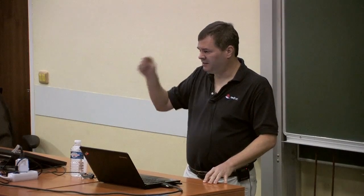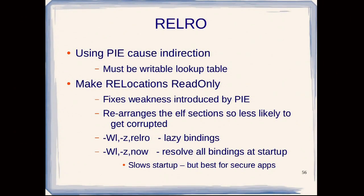Fortify Source needs to be used any time you use PIE, because PIE requires some writable addresses so the runtime linker can update mappings as things move around in memory, doing indirect calls. RELRO also rearranges ELF sections so they're less likely to get corrupted. There are two ways to use RELRO: plain RELRO, which is considered partial, enabled by default since Fedora 18; and the 'now' option, which resolves all addresses at startup and then marks that memory section read-only. It slows startup a little, but it is the best option for securing applications.